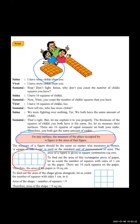To find out the area of this rectangular piece of paper, let us count the number of squares with sides of one centimeter. We are going to assume here that one box equals one centimeter. One box is for one centimeter — yes or no? Now look at your students.